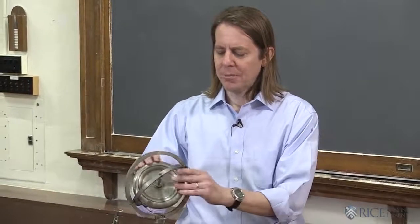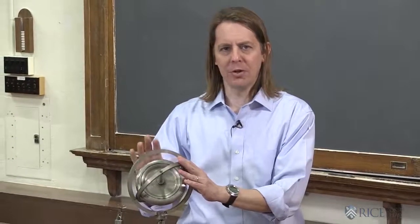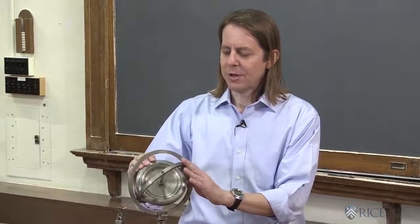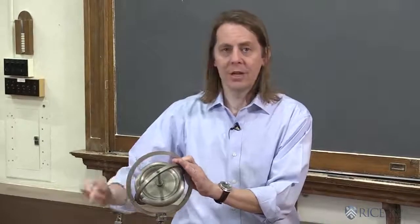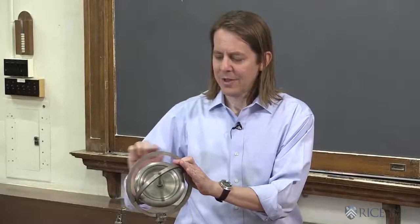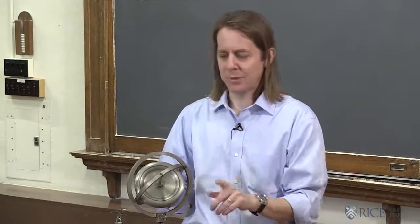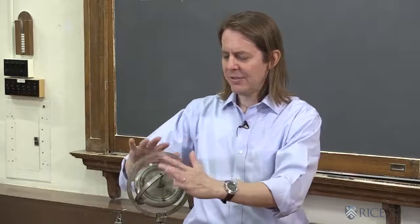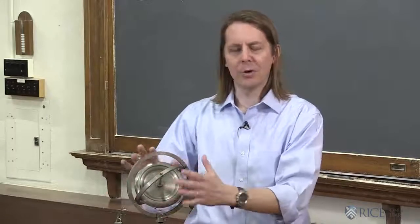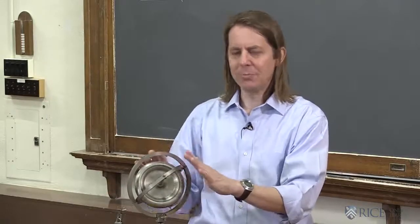You've probably seen gyroscopes before with these sort of model of the atom looking crazy things. I want to take a minute to show you one and make sure you think about the right part. In the center is the big heavy spinning disk. That's the part we care about. That has a big angular momentum that points out like that as you would expect for a spinning disk. These weird circular parts on the outside are really just the mount. It's called a gimbal mount.